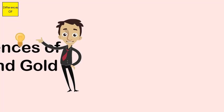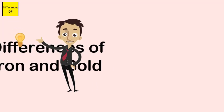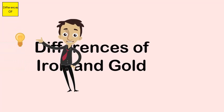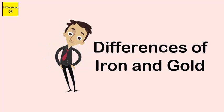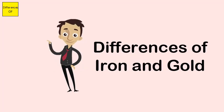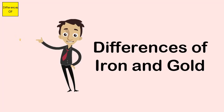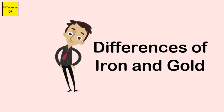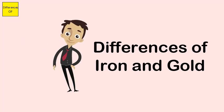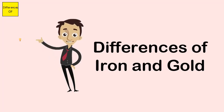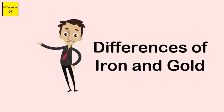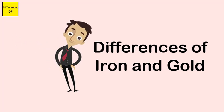Differences between iron and gold: Iron is bulky, gold is lighter. Iron is a solid metal, gold is a brittle metal. Iron is used for heavy works, gold is used in preparation of ornaments. Iron is generally lack in color.